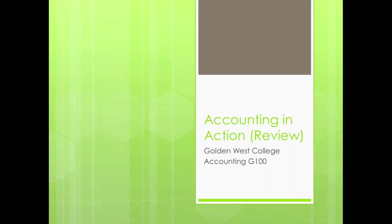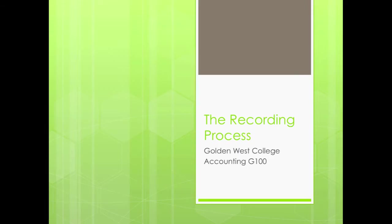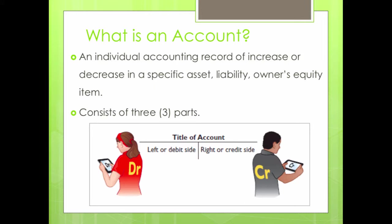In Chapter 1 you learned how to analyze business transactions in terms of the accounting equation and to present the effects in tabular form. The tabular format is a basic way of recording accounting transactions and can be a method you adopt if you have a small business. However, what if your business is growing and the number of transactions per day are in the hundreds or even thousands? This method is very time consuming. So in Chapter 2, we'll introduce you to the recording process, which streamlines the tracking of transaction data.